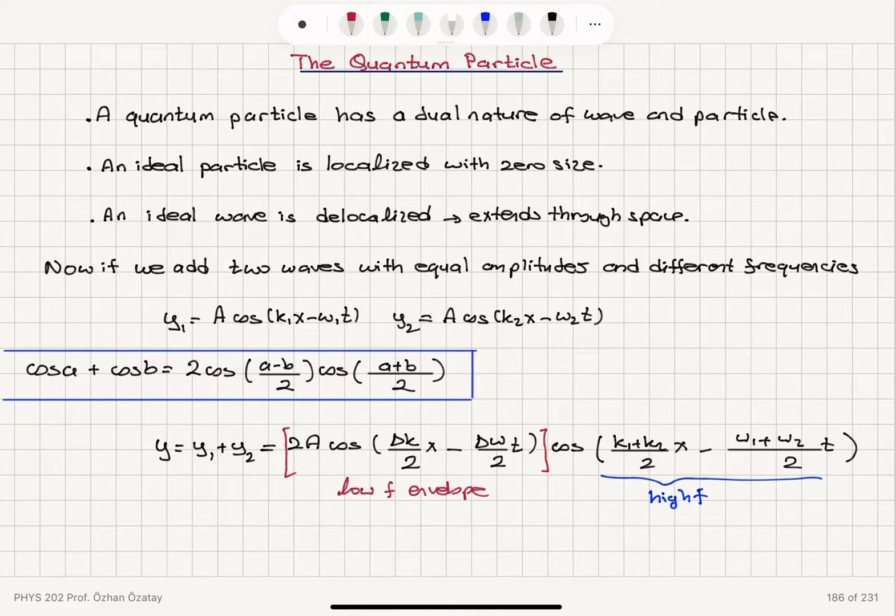The quantum particle. We have seen that de Broglie suggested a quantum particle has a dual nature of wave and particle. So what is an ideal particle? It's localized with zero size, just a single point.